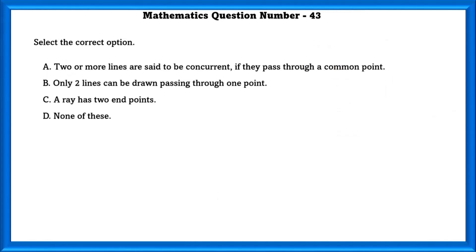Mathematics question number 43. Select the correct option. 2 or more lines are said to be concurrent if they pass through a common point. This is true. Only 2 lines can be drawn passing through 1 point. This is false. Infinite number of lines can be drawn that pass through 1 point.